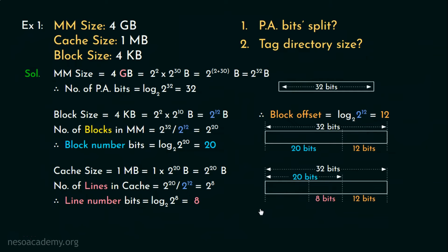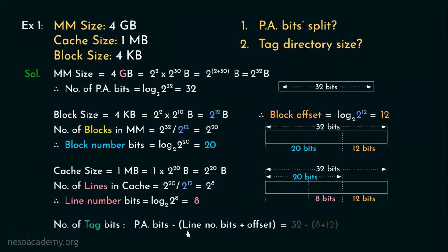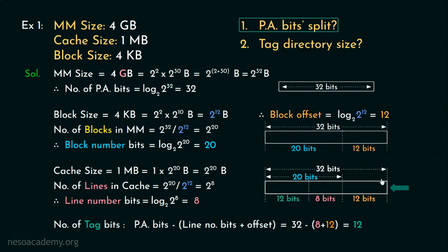We only need to figure out the tag number bits to find the entire PA bit split. The number of tag bits is found by subtracting the line number bits and offset bits from the PA bits — 32 minus (8 plus 12) — which gives 12. So 12 bits are used for the tag number, completing the PA bit split.